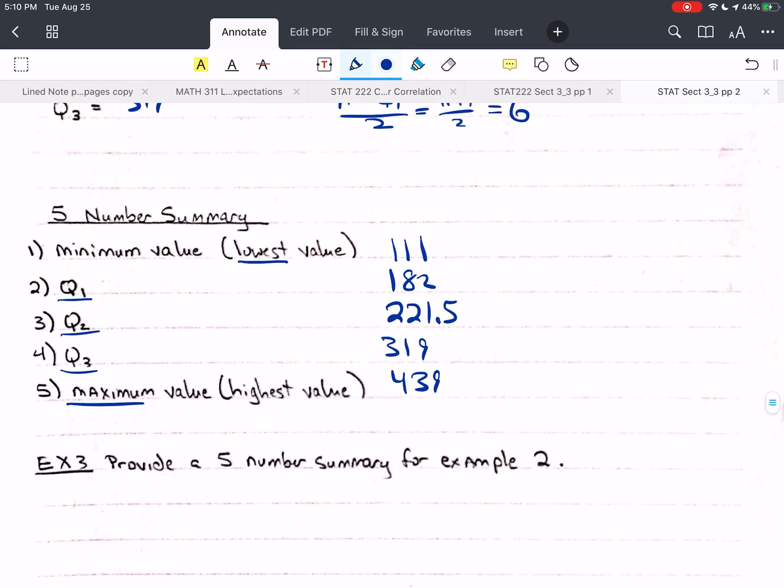Okay. So that was, so we just did that. That's going to be 111, 182, 221.5, 319, and 439. All right.